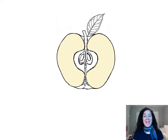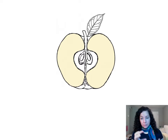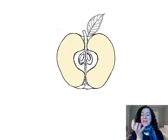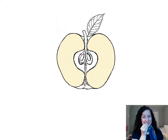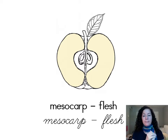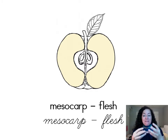The edible part of the pulpy fruit or vegetable — that means if we have a fruit that has flesh that we can eat — that part that we eat is called the mesocarp. We also know it as the flesh of the fruit.